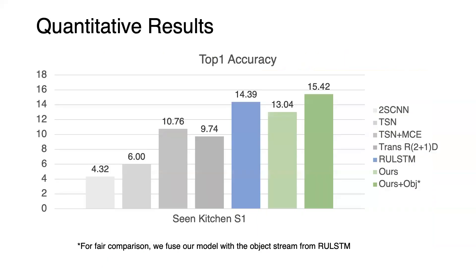Here are our action-anticipation results on application datasets. The results are reported as top-1 accuracy. Our method performs on par with the previous best method, RULSTM, on seen action classes. Note that RULSTM adopts optical flow and object features as additional input modalities. When fusing with the same object stream from RULSTM, the resulting model achieves state-of-the-art results.